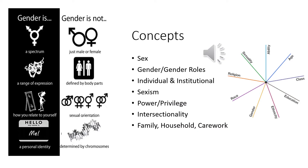As you may have learned elsewhere, feminist theory distinguishes between sex, which is your biology, and gender or gender roles, which is the meaning, attitude, or behavior. Gender roles, according to feminist theory, are created via an interactional process between individuals and society, also referred to as the institution.